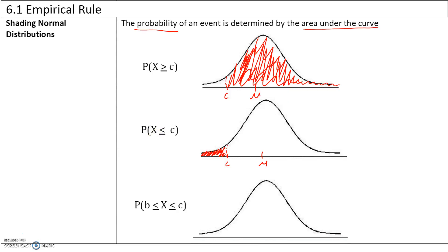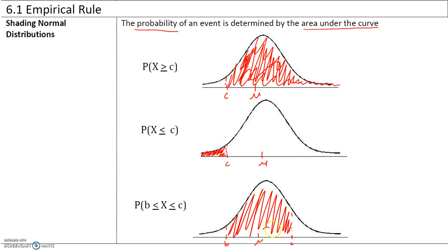The probability that a value x is between b and c — if mu is the mean, b and c are your bounds — is given by the area shaded in between b and c under the curve.